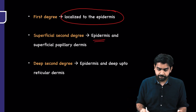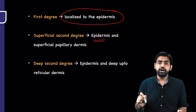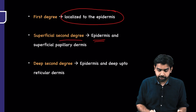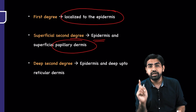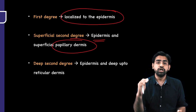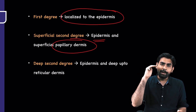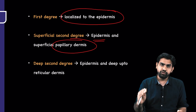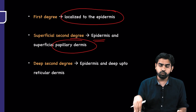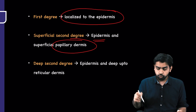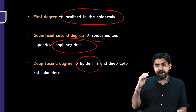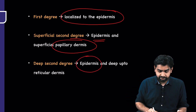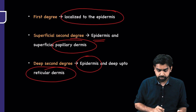In superficial second degree burns, there is involvement of the epidermis along with part of the dermis — only the superficial papillary dermis is involved. In deep second degree burns, there is involvement of the epidermis and the dermis up to the reticular dermis.